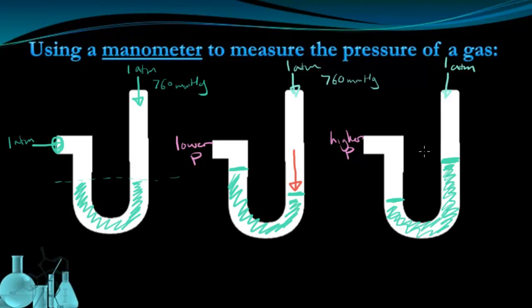In the higher pressure system on the right, we're going to have the higher amount of pressure pushing down over here, making the levels of mercury uneven.